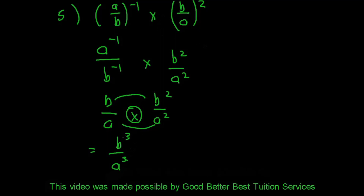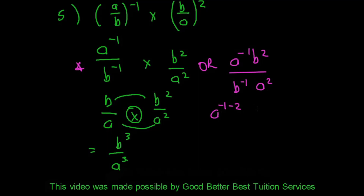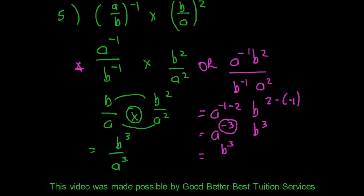We could also simplify directly: we have a to the power negative 1 times b squared over b to the power negative 1 times a squared. Dividing and subtracting exponents: a gives negative 1 minus 2 equals negative 3, and b gives 2 minus negative 1 equals 3. That gives a to the power negative 3 times b to the power 3. Since a is negative, it moves to the denominator, giving b cubed over a cubed — the same final answer.